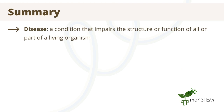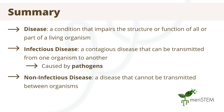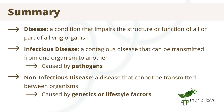So in summary, a disease can be defined as a condition that impairs the structure or function of all or part of a living organism that is not a direct result of a physical injury, and there are two main types of disease: those that are infectious and those that are non-infectious. Infectious diseases are contagious and can be transmitted from one organism to another — these are caused by pathogens. Non-infectious diseases are not contagious and cannot be transmitted — these are caused by genetic and lifestyle factors, or a combination of both.